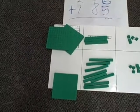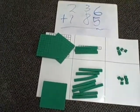236 plus 185. You start by adding the ones. 6 plus 5.